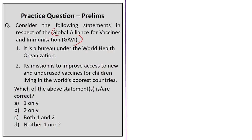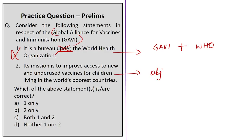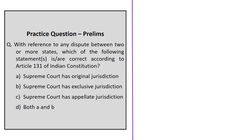A practice question on GAVI: Statement one — it is a bureau under the World Health Organization — is incorrect, as GAVI is an independent international alliance or organization that works in partnership with WHO, not under it. Statement two — its mission is to improve access to new and underused vaccines for children living in the world's poorest countries — is correct. Since the question asks for the correct statement, the answer is option B, two only.